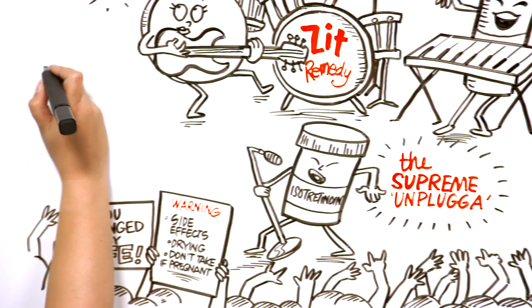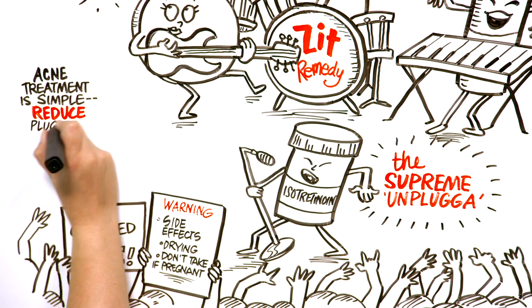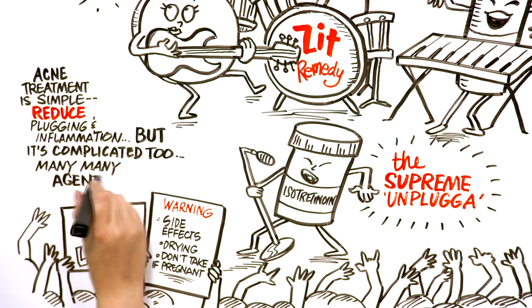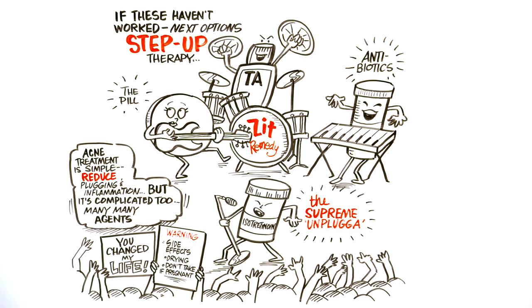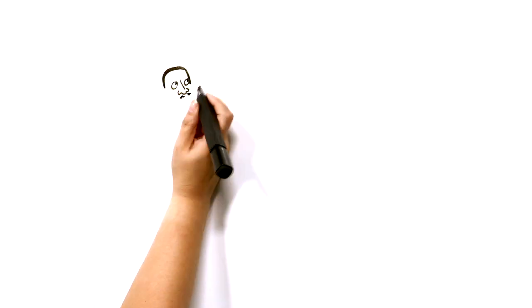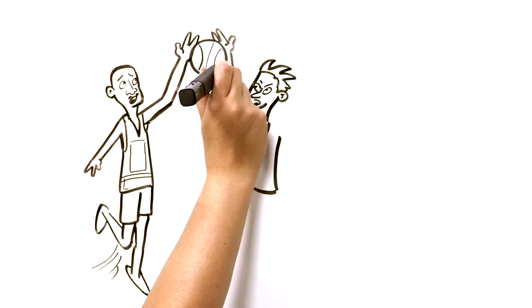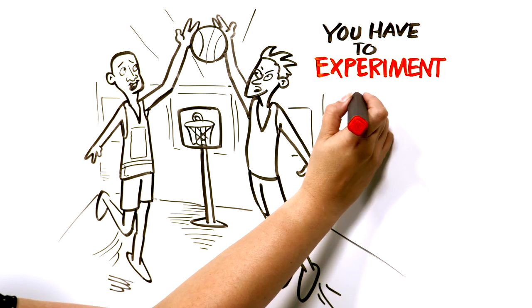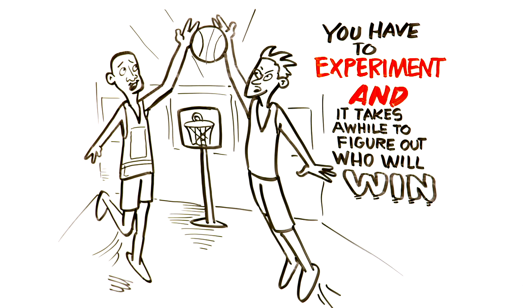In some sense, acne treatment is simple. Reduce plugging and inflammation. But it's also complicated as there are many, many agents that do these two things. Treating acne is a bit like basketball. You have to experiment with various players and combinations. The score can fluctuate initially and it takes a little while to figure out who will win. But you can win if you stick with it.